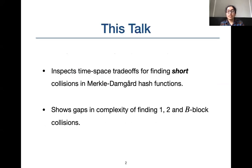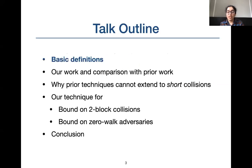In this talk, we present our work on time-space trade-offs for finding short collisions in Merkle-Damgård hash functions. In particular, we showed gaps in the complexity of finding 1, 2, and B-block collisions. This is the talk outline — let's start with some definitions.